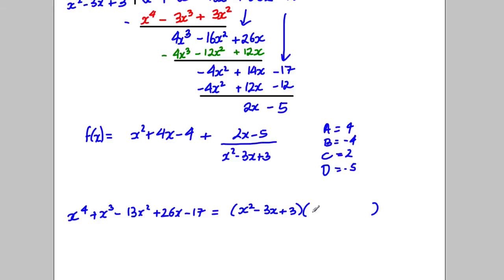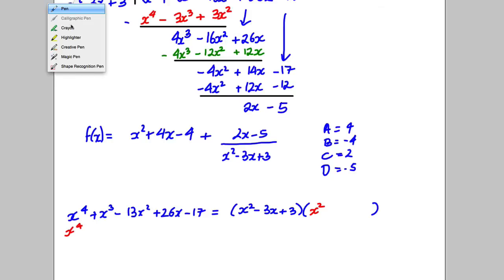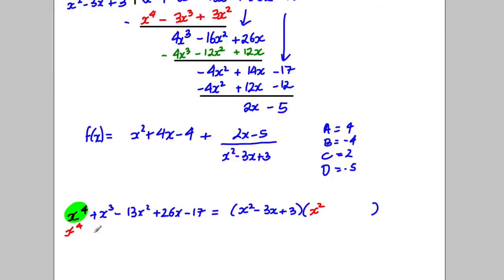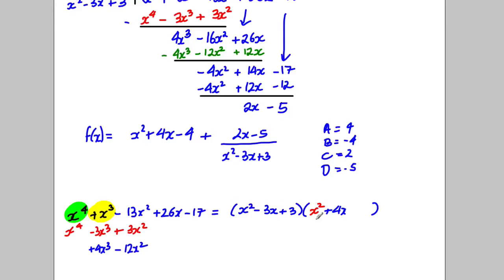I clearly need an x² there, because that x² multiplied by x² gives me the x⁴ I'm after. However, that creates a −3x³ and a +3x² which I don't want. To fix the x³ term — I need +4x³ — if I add +4x, then 4x times the divisor gives me the 4x³ I want. But that creates a −12x² and a +12x.